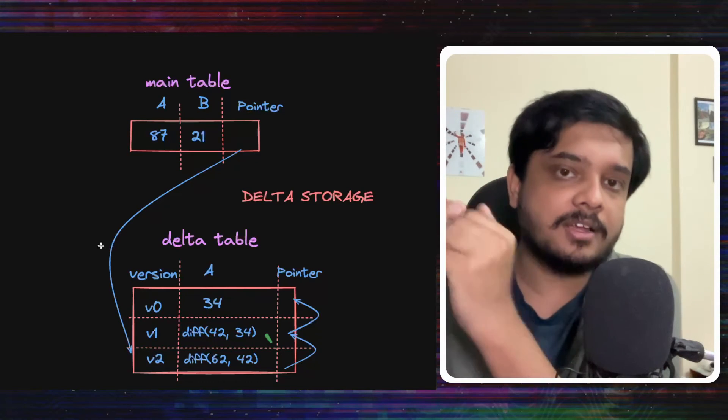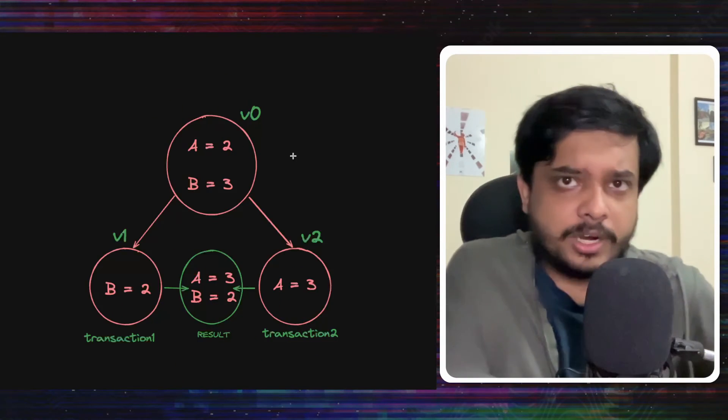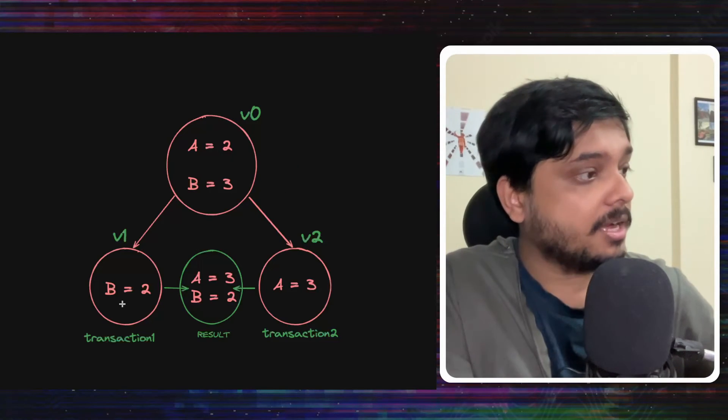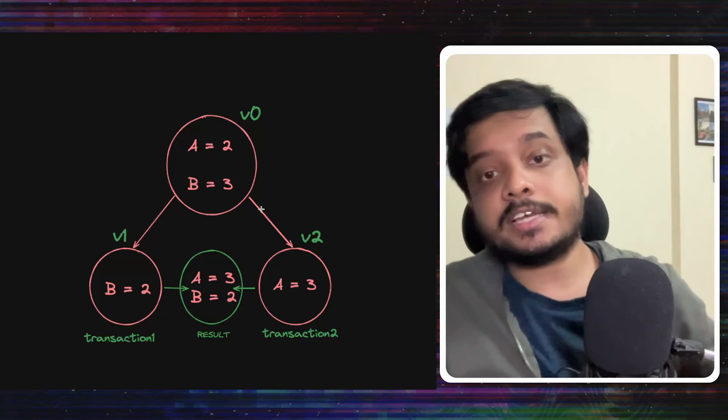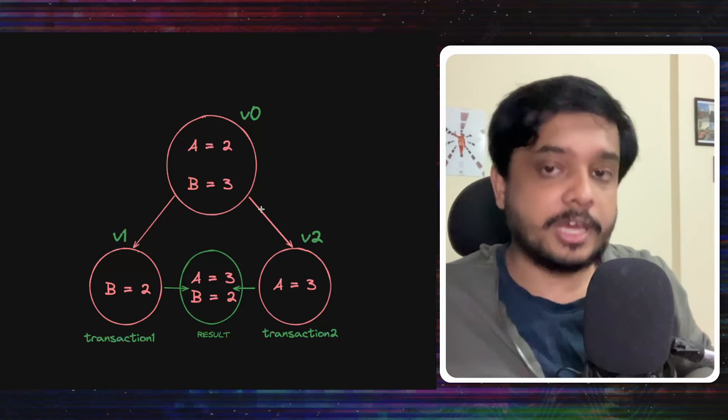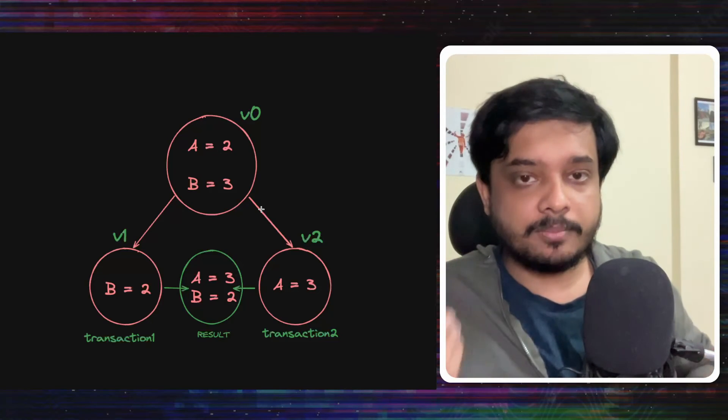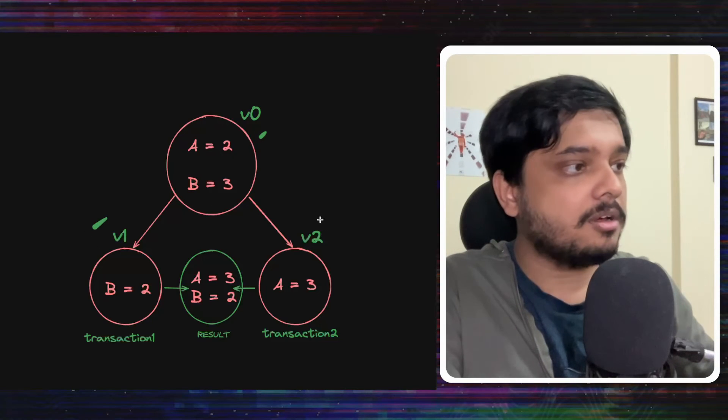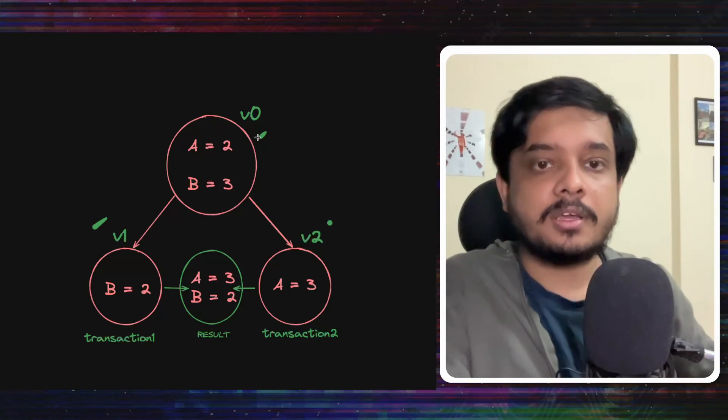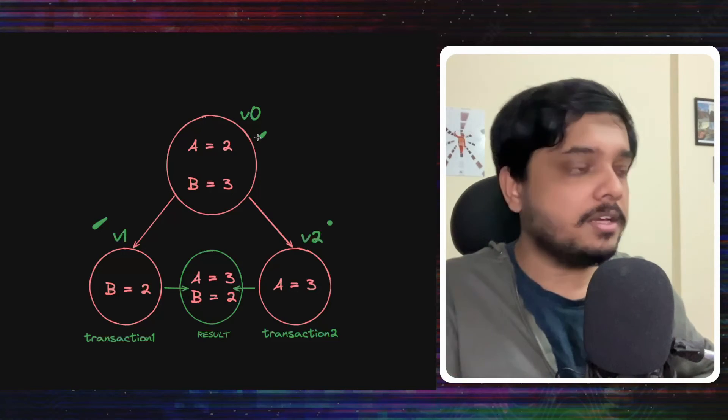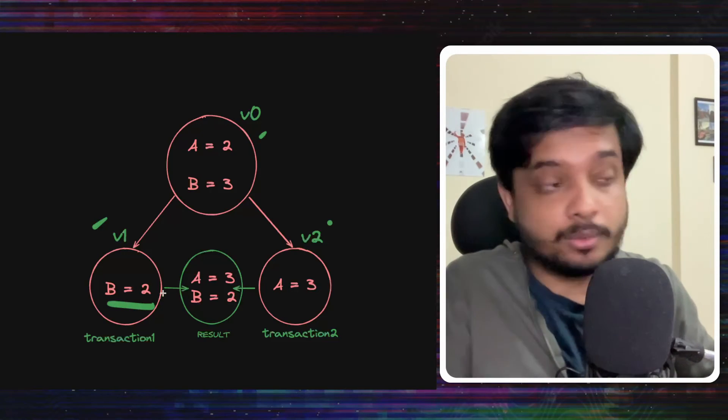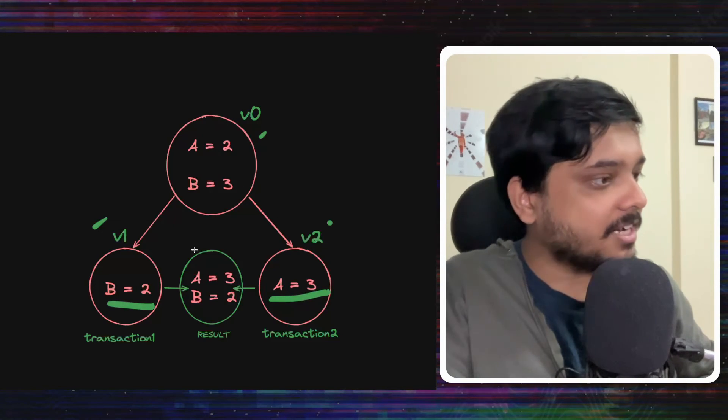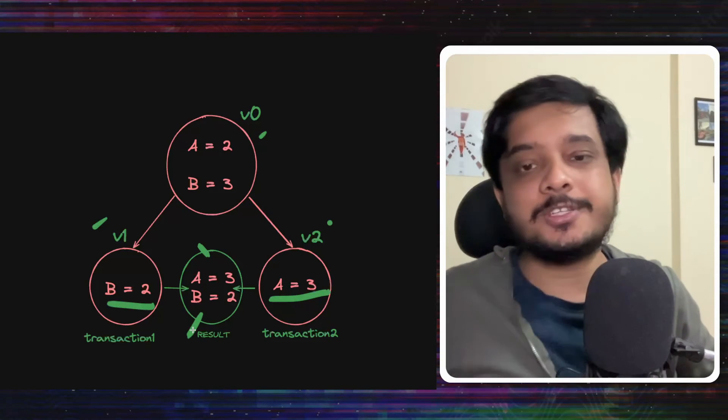Now that I've put MVCC on a pedestal, let me talk about the challenges. Look at this example. If A equals 2, B equals 3, and there are two transactions. Transaction 1 reads the value of A and puts it into B. And transaction 2 reads the value of B and puts it into A. And both the transactions started at the same time. So, both are using this same version of the data. They have forked their own version, but they have started with this same version of the data. Now, transaction 1 sets B to 2. Notice that it only writes to B. Transaction 2 sets A to 3. The final result would be A equals 3, B equals 2.